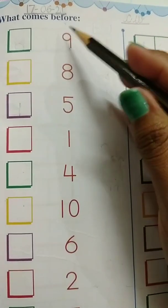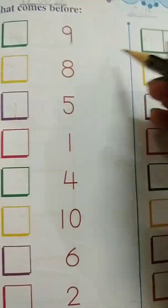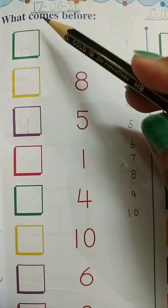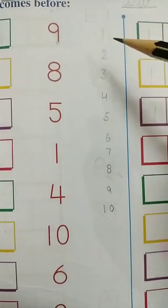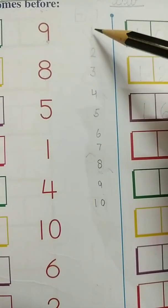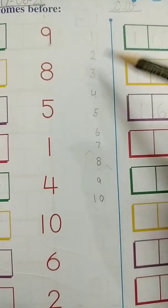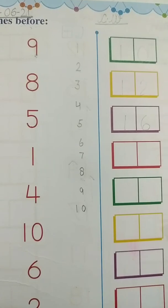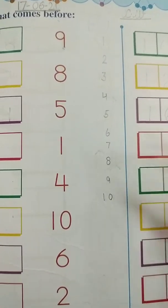So students, here you all have to find out what comes before 9. 9 se pehle kya aata hai? Here I have written the counting from 1 to 10. Kids, you all will not write on the book. You can write on rough, but don't write on your book.